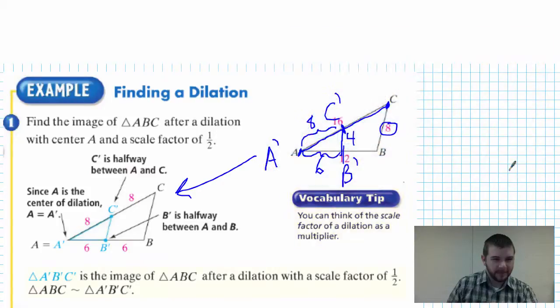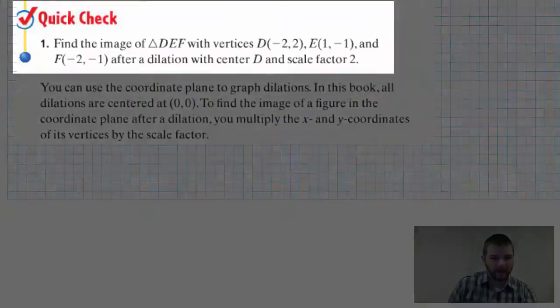Notice the statement at the bottom of the example: triangle A prime B prime C prime is the image of triangle ABC after a dilation with a scale factor of one-half. Also note: triangle ABC is similar to triangle A prime B prime C prime.